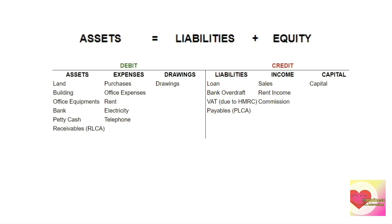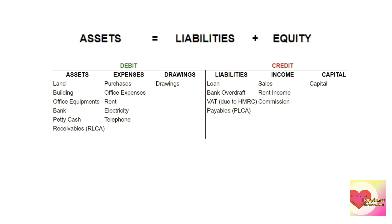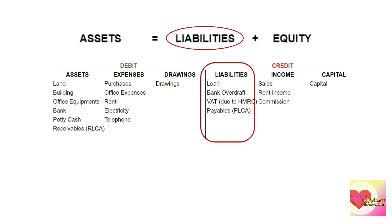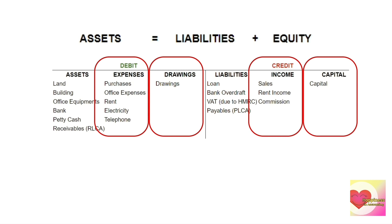Now let's associate the accounting equation to DEAD CLIC. In the equation, assets are on the left side, and in DEAD CLIC assets are also on the left side — the debit side. Liabilities are on the right side in both the equation and DEAD CLIC — the credit side. The equity is also on the right side of the equation; however, there is no 'equity' account in DEAD CLIC — we only have expenses, drawings, income, and capital.